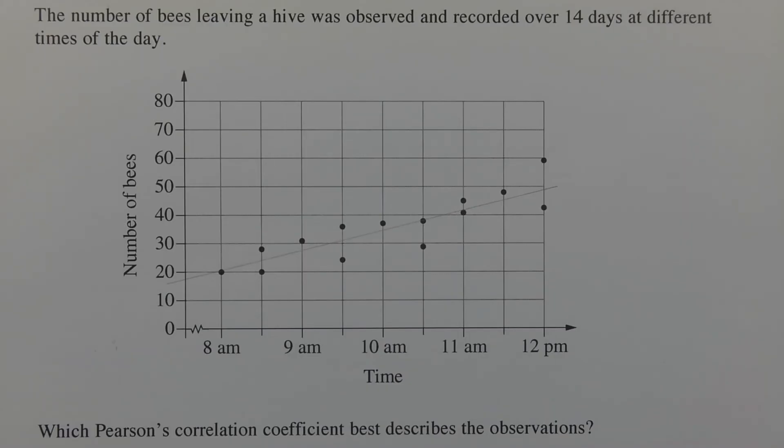So we have a strong positive correlation between the number of bees and the time of day, as indicated by this line of fit and the closeness of the points to this line of fit.